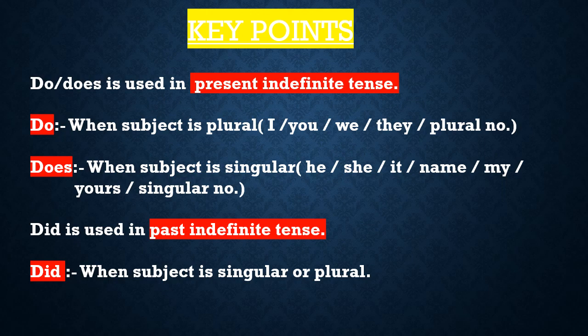Before explaining all the uses, you have to learn and remember these key points. Do or does is used in present indefinite tense. Do is used when the subject is plural — if I, you, we, they, or a plural number is used as a subject, then you have to put do. Does is used when the subject is singular — if he, she, it, or anybody's name, or any singular number is used as a subject, then you have to use does.